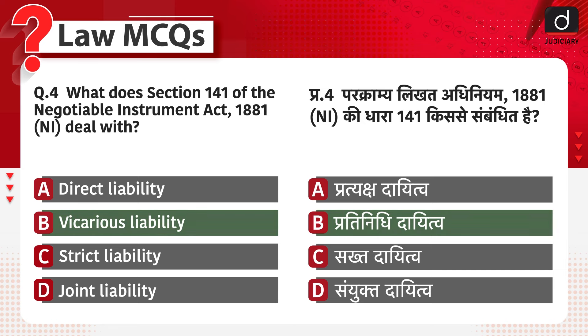Vicarious liability. इस प्रश्न का सही उत्तर है option B, प्रतिनिधि दायित्व।